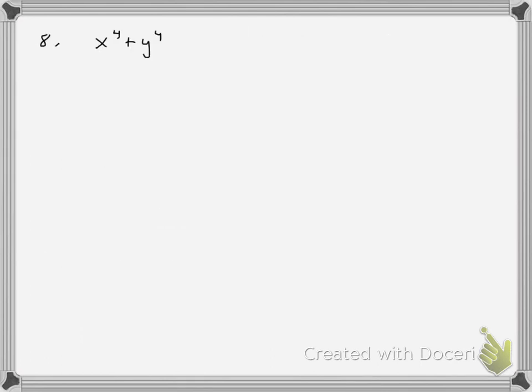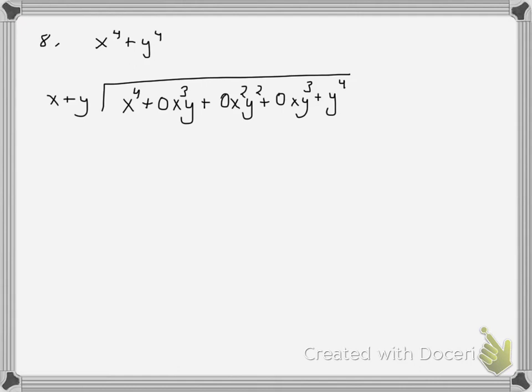The trick to number 8 is to make sure that I introduce a placeholder for every term in between. You cannot do this long division without putting in my placeholders. Notice what's happening. My x terms go from x to the fourth to x to the third to x squared to x. And my y terms go from none to y to y squared to y cubed to y to the fourth. So as one variable descends, the other variable ascends. And now it becomes an easier task.